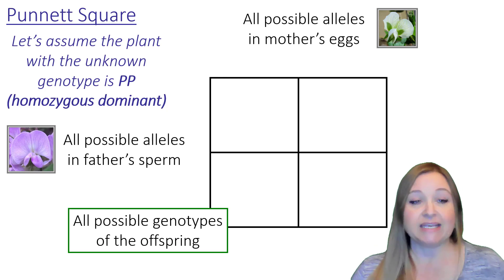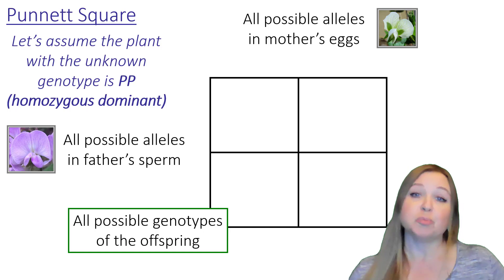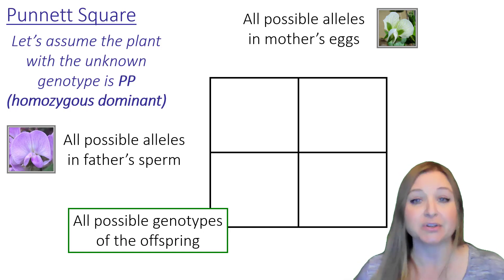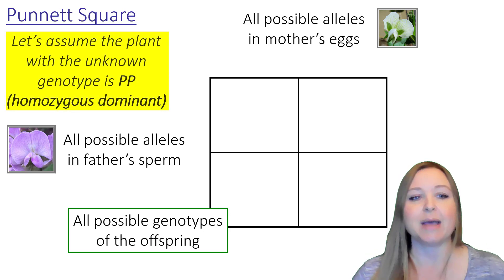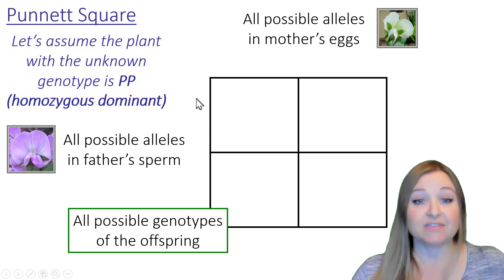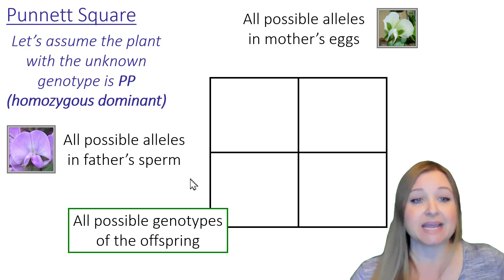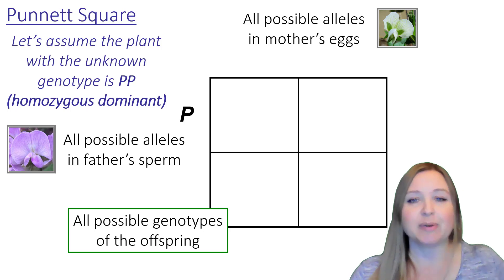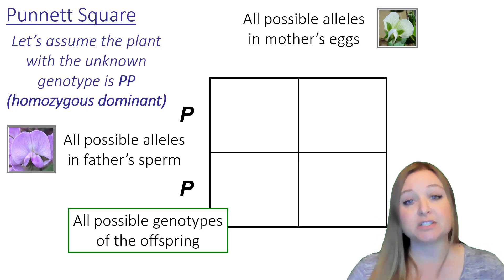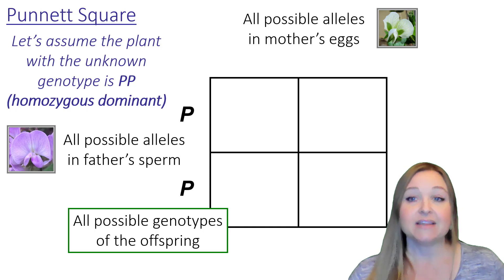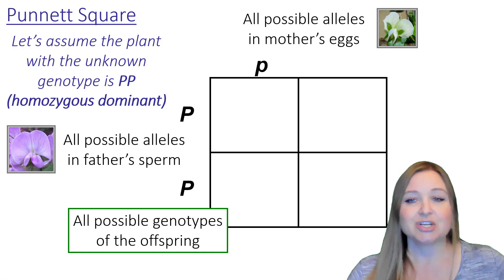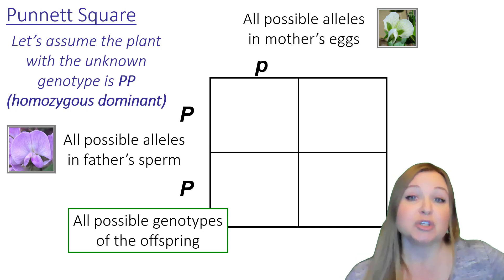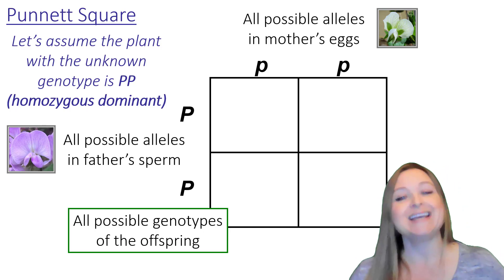We know the purple flower plant can be big P, big P or big P, little p. Let's work out scenario one: the plant with the unknown genotype is big P, big P — homozygous dominant. On the left side of our Punnett square we put the two possible alleles from the father, which are both big P. On the top we put the mother's alleles — she's homozygous recessive with two little p's, so she passes little p in each egg.